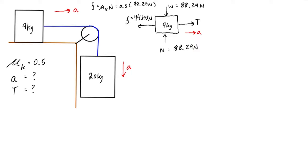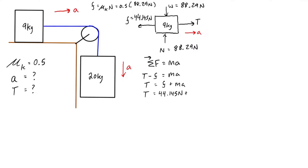Now let's apply Newton's second law: sum of forces equals ma. Taking the direction of acceleration as positive, we have tension minus friction equals ma. Isolating for tension gives us T equals friction plus ma, which substituting in known values is 44.145 newtons plus 9 kilograms times the unknown acceleration.